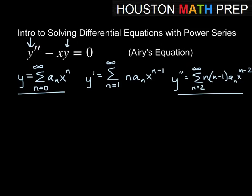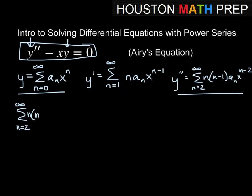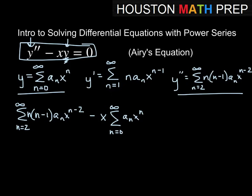These two expressions go into our equation. Rewriting the equation in terms of the power series gives us: the sum from n equals 2 to infinity of n times n minus 1 times a sub n times x to the n minus 2 — that's our y double prime — minus x times y, where y is the sum from n equals 0 to infinity of a sub n times x to the n, all equal to 0.